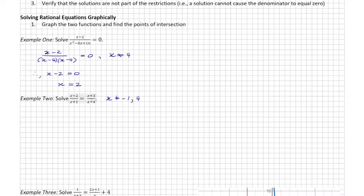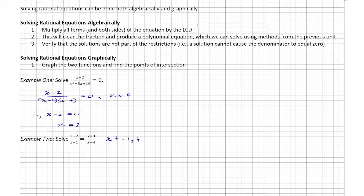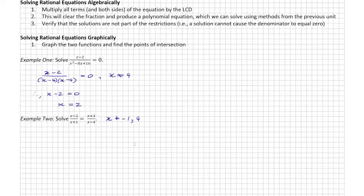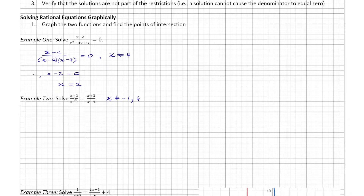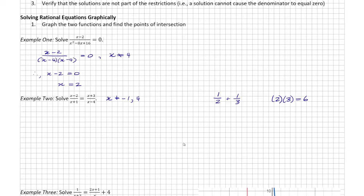I want to clear the fractions to get a polynomial equation, by multiplying the entire equation on both sides by the lowest common denominator. To find the LCD, I look at the two denominators — similar to how 1 over 2 plus 1 over 3 has a common denominator of 6 by multiplying 2 and 3. So the lowest common denominator here is x plus 1 times x minus 4.